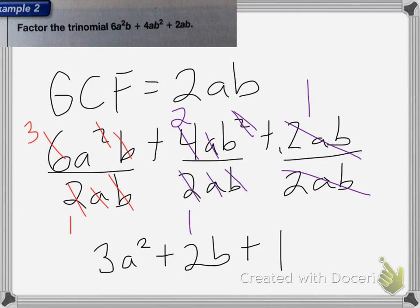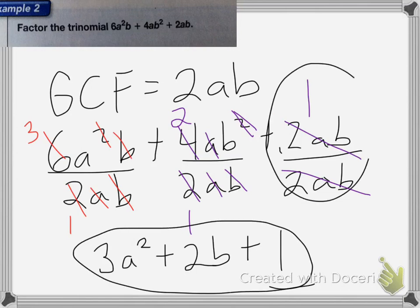So this is my remaining amount, my remaining trinomial. Notice that this third term here is 1, not 0, because if we divided those two, we would get 1, not, we didn't subtract to get 0.